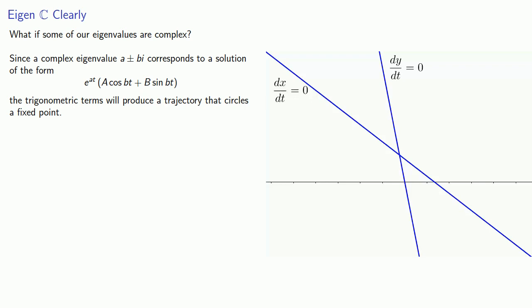What happens to that trajectory depends on the value of a. If a is greater than zero, the exponential component will grow without bound, and so our trajectory gets farther from the fixed point. We spiral outward, and the fixed point is unstable.